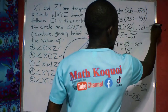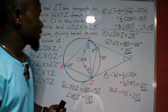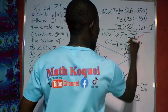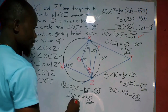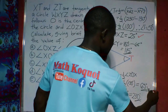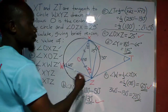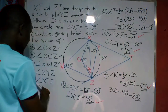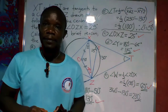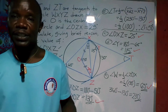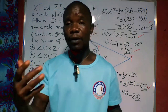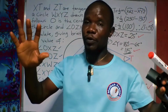Therefore, angle XTZ equals 50 degrees. To summarize: angle OXZ is 25 degrees, angle XOZ is 130 degrees, angle XWZ is 65 degrees, angle XYZ is 115 degrees, and angle XTZ is 50 degrees. Thank you for watching — please subscribe, share the video, and drop your comments.